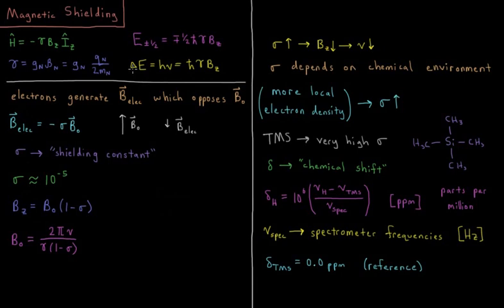The difference in energy between the two energy levels is equal to Planck's constant times the frequency of the photon that we absorbed to transition between these two levels, which is equal to h-bar times gamma times Bz.